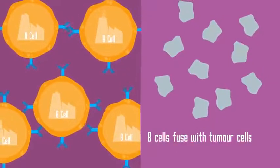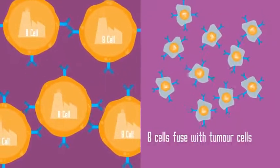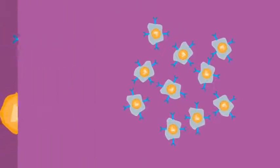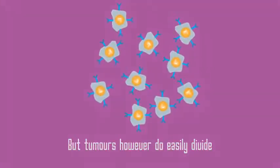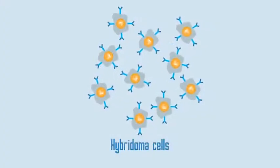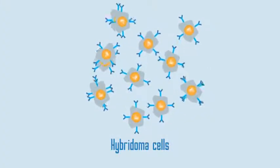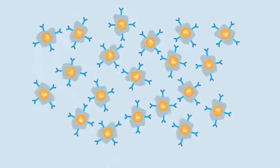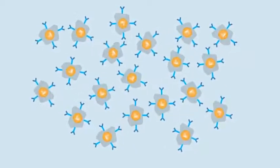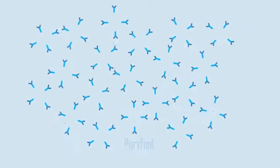We need to fuse the antibody producing B cells with a tumor cell because the B cells don't have the ability to divide. But tumors, however, do divide easily. This fusion cell is called a hybridoma cell. The hybridoma cells reproduce rapidly to make cloned cells, which all make the same antibody. These monoclonal antibodies are collected and purified, ready for use.